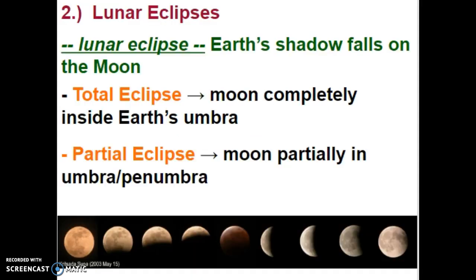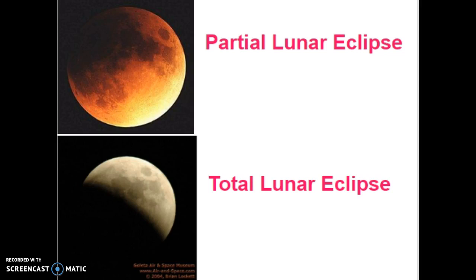Lunar eclipses, on the other hand, are more common. This is when the Earth's shadow falls on the Moon — we are blocking the sunlight from the Moon. In a total lunar eclipse, the Moon is completely inside the Earth's umbra. In a partial eclipse, the Moon is partially in the umbra or penumbra. In a partial lunar eclipse you tend to see a reddish, orangish glow due to the diffraction of light, while in a total lunar eclipse it would be more of a black and white shadow.